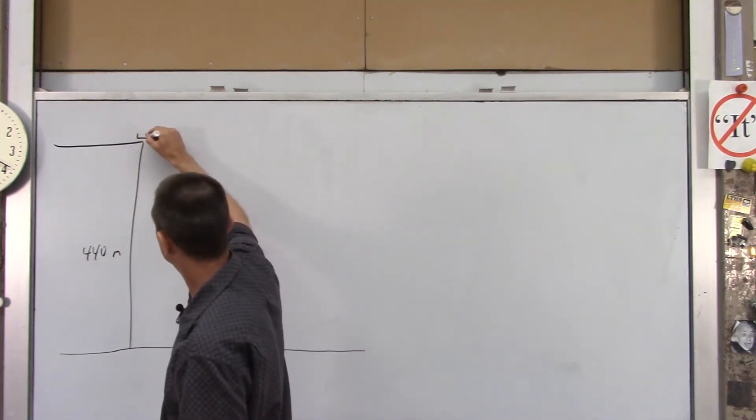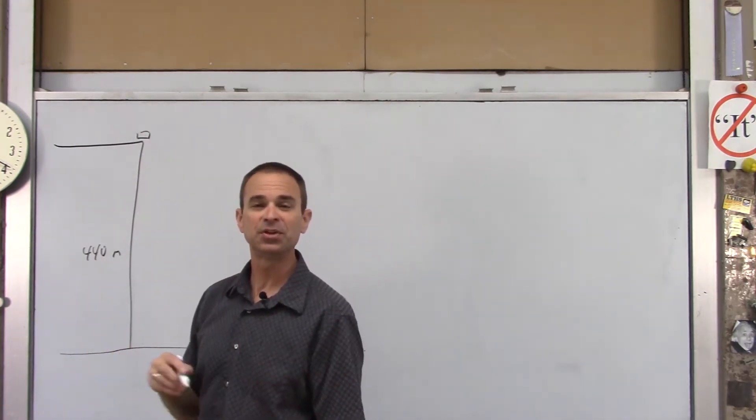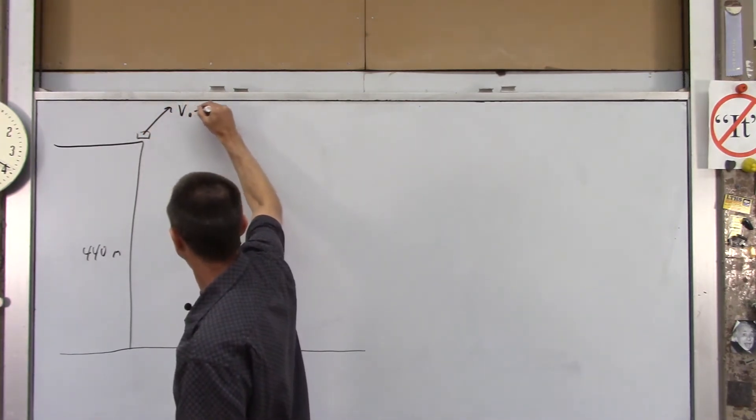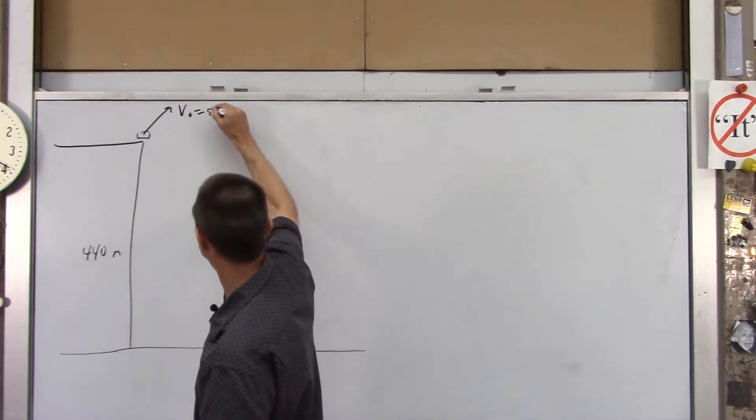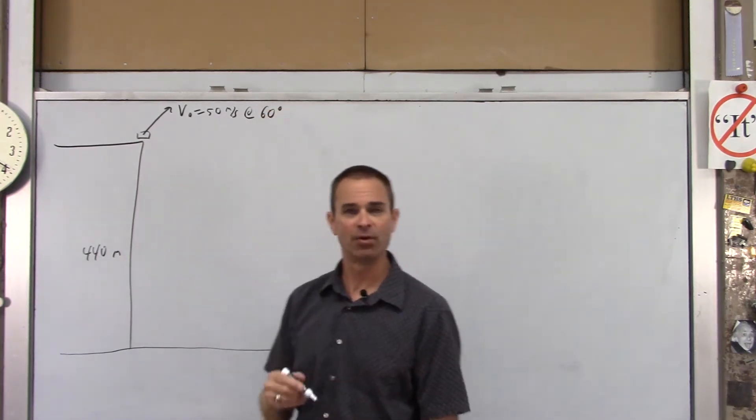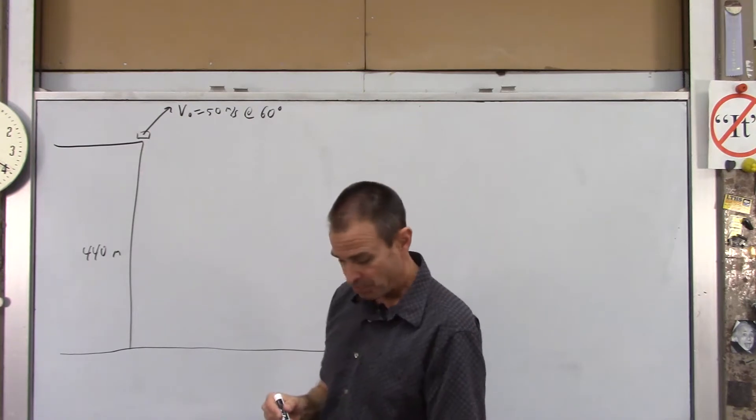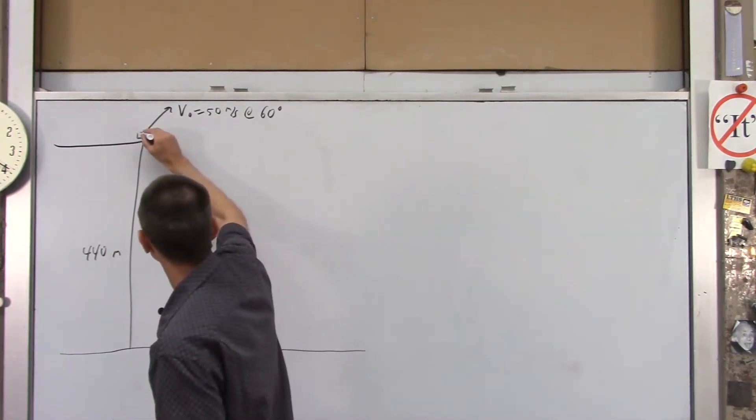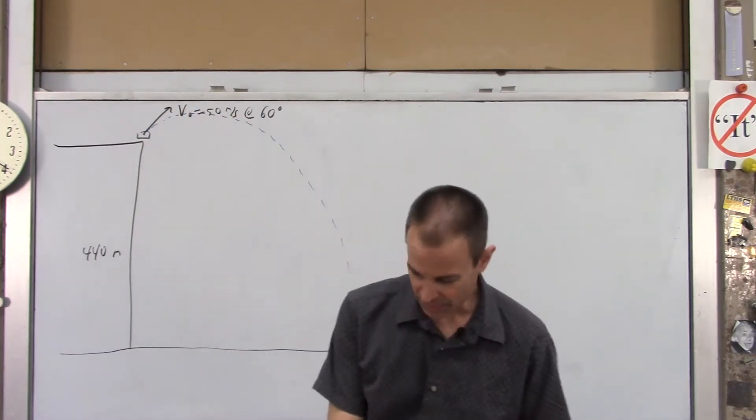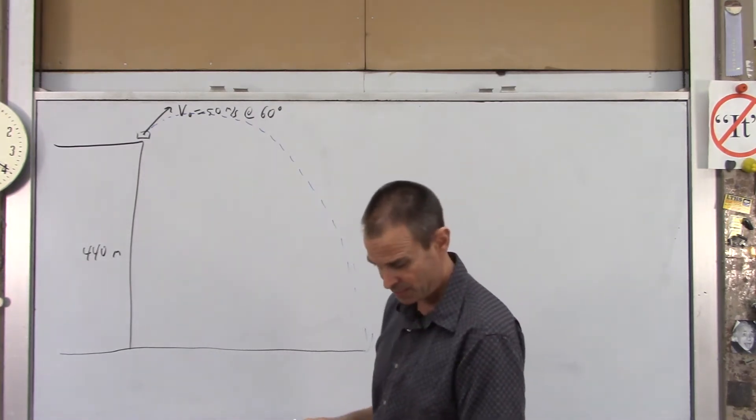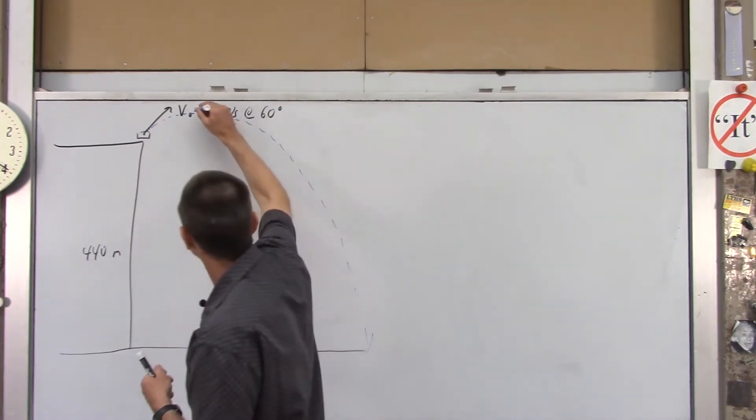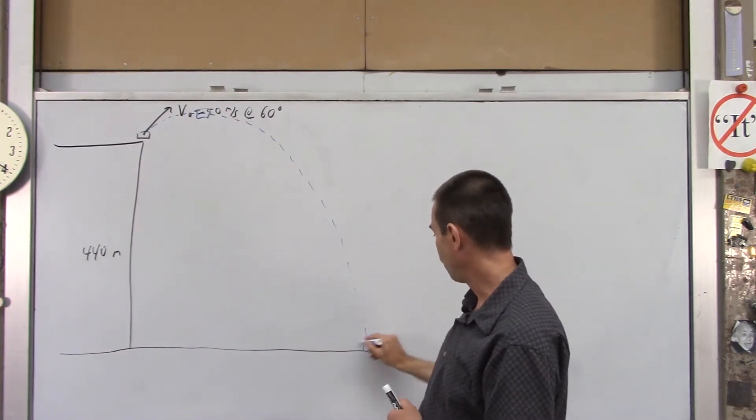We're going to take our book and launch it at an angle of 60 degrees above the horizontal. So its launch velocity, v-naught, will be 50 meters per second at 60 degrees above the horizontal. And that book is going to follow a path, a parabolic path, and it's going to strike the ground. So the things that I'm going to help you determine today is we're going to look at two parts of that path. We're going to look at the top of the path, and we're going to look at the total path.